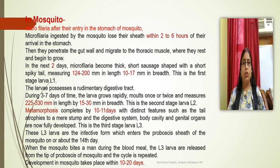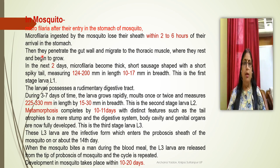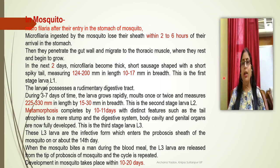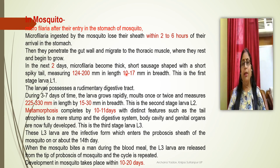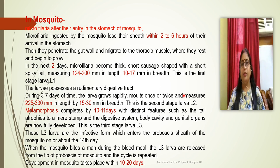Inside the mosquito, microfilariae find their way into the stomach. They lose their sheath within two to six hours, then penetrate through the gut wall and migrate to the thoracic muscle, where they rest and begin development. Within two days, microfilariae become thick and short, sausage-shaped with a short spiky tail, measuring 124 to 200 mm in length and 10 to 17 mm in breadth — this is the first stage larva.